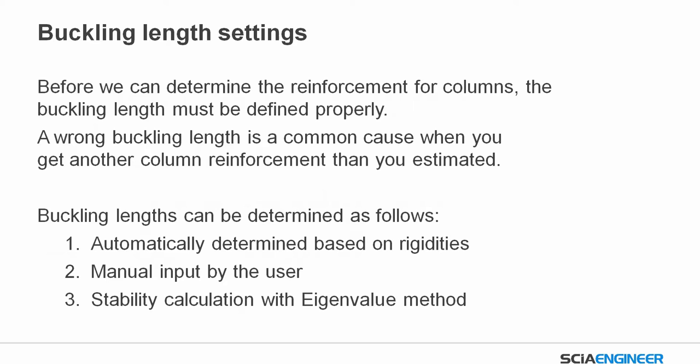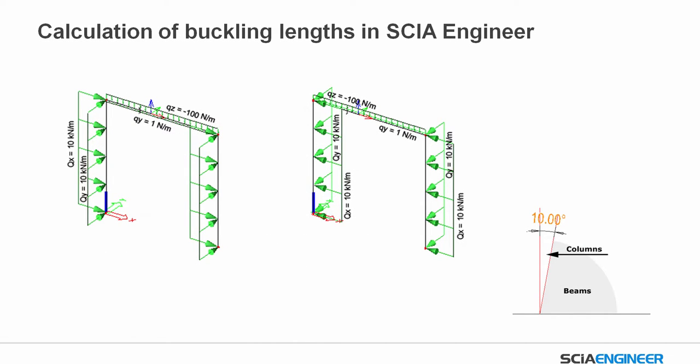Before we can determine the reinforcement for columns, the buckling length must be defined properly, because a wrong buckling length is a common cause when you get a different column reinforcement than you estimated. The buckling length can be automatically determined in SIA Engineer based on rigidities, manually input, or determined by stability calculation. SIA Engineer inputs some load cases in the background and calculates it.